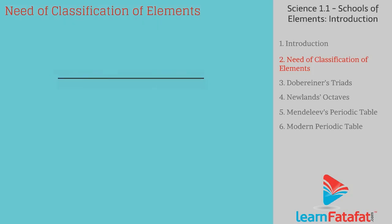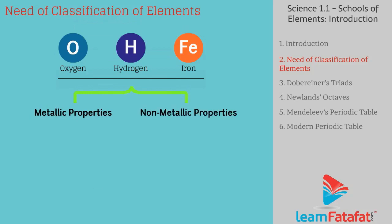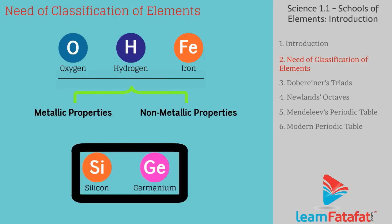Initially, when there were very few known elements, classification was done based on metallic and non-metallic properties. The problem with this arrangement was that some elements showed properties of both metals as well as non-metals, making their grouping difficult.